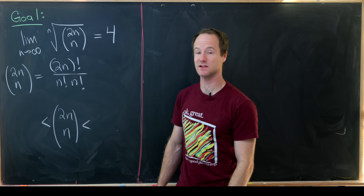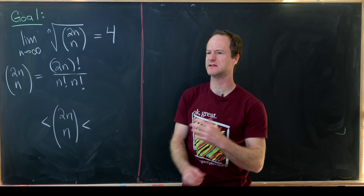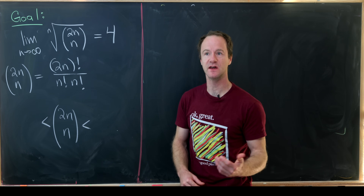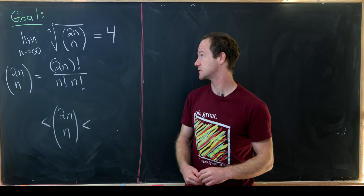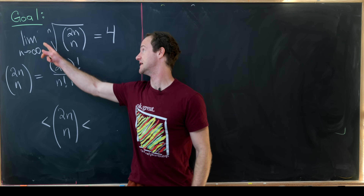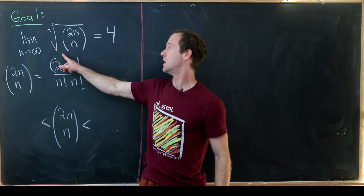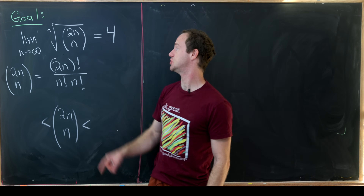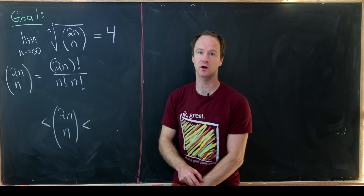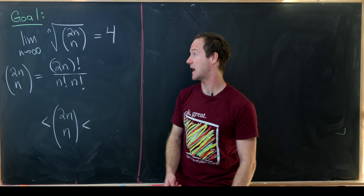Today we're going to calculate a classic limit. This type of limit is something you might see within a real analysis class when you're working with sequences of numbers. In particular, what we will show today is that the limit as n goes to infinity of the nth root of the binomial coefficient 2n choose n is equal to 4. This is sometimes called a central binomial coefficient.